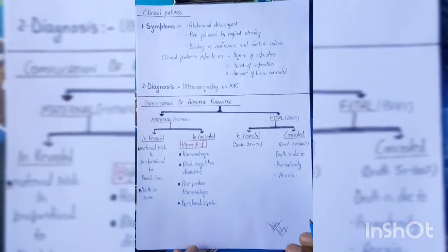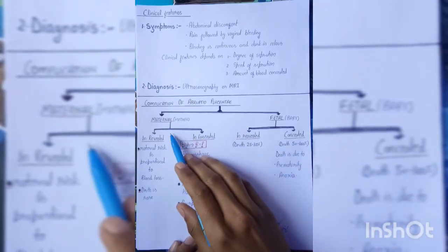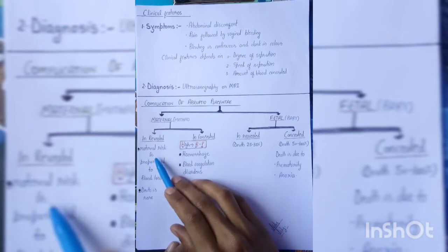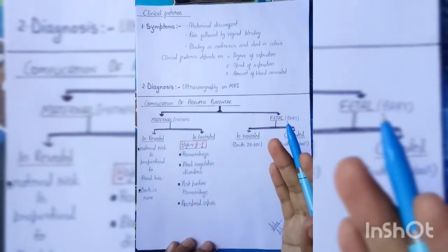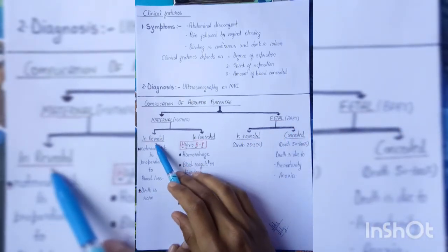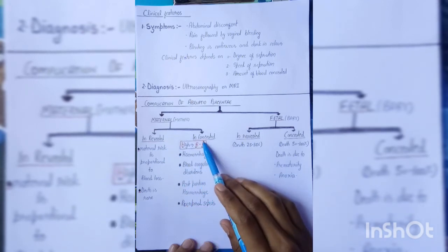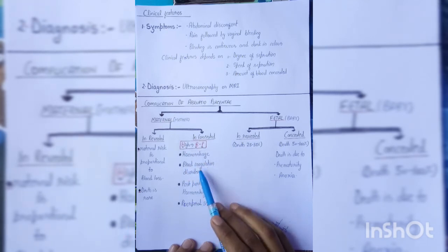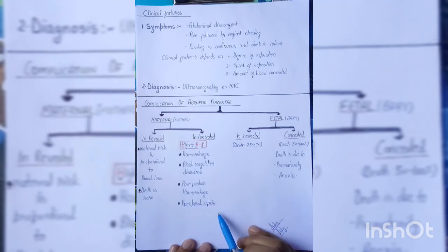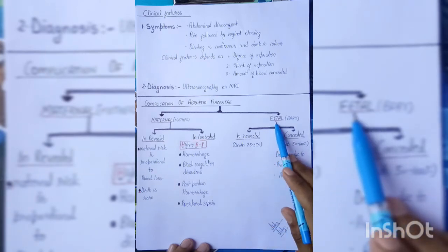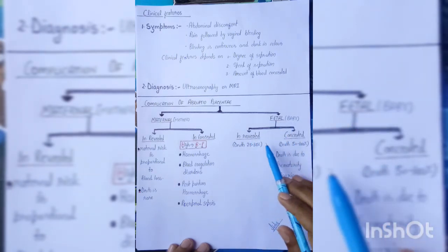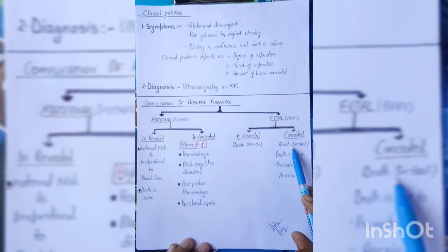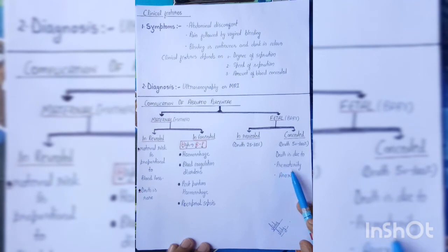Complications of abruptio placenta are again divided into maternal and fetal. In the revealed type, maternal risk is proportional to blood loss, and death is rare. In the concealed type, complications can be remembered with 'high BP': H for hemorrhage, B for blood coagulation disorder, P for postpartum hemorrhage and puerperal sepsis. For fetal complications: in revealed type, death chances are 25–30%; in concealed type, death chances are 50–100%, mainly due to prematurity and anoxia.